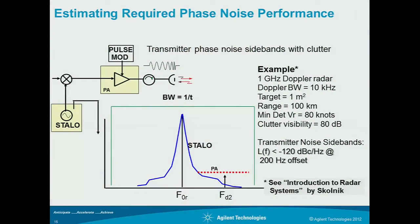You've talked about your Doppler offset — your frequency offset — and maybe spurs. Your next question is what's the absolute level that you need to get to? This example is from a book called Introduction to Radar by Skolnick. If you want to understand where all this came from, that's a good reference — we have it in the back of this presentation.